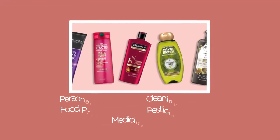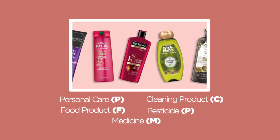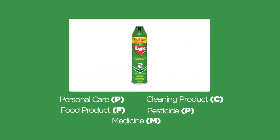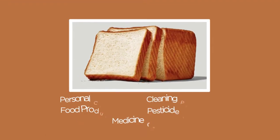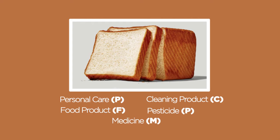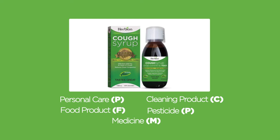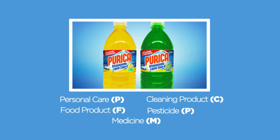Number 5 is shampoo. The answer is P. Number 6 is insecticide spray. The answer is PE. Number 7 is toothpaste. The answer is P. Number 8 is bread. The answer is F. Number 9 is cough syrup. The answer is M. Number 10 is the washing liquid. The answer is C.